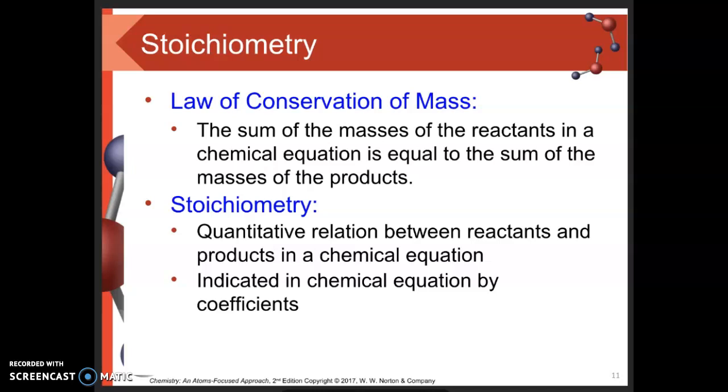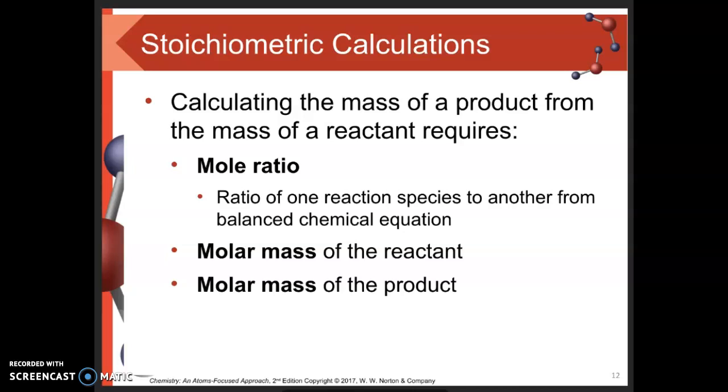Stoichiometry is the quantitative way we do these calculations, requiring balanced chemical equations with appropriate coefficients. Some calculations will look familiar: molar masses and using Avogadro's number to figure out the number of particles. We covered that when we talked about moles, empirical formulas, and mass percentages. The new part is mole ratio, which comes directly from a balanced chemical equation.